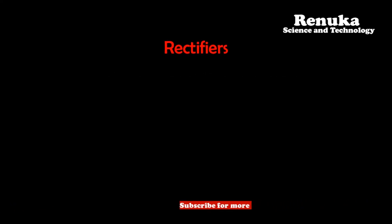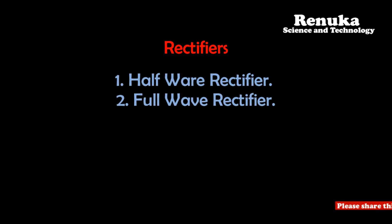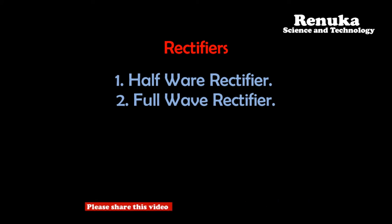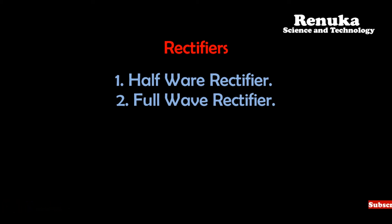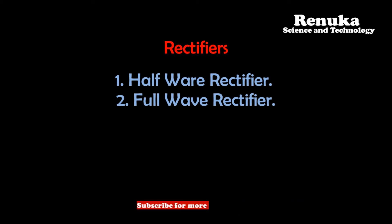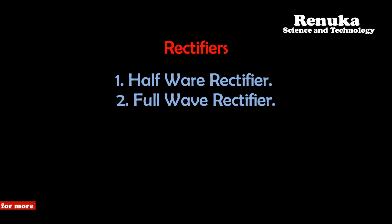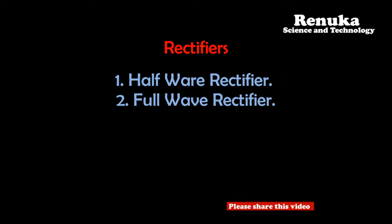Rectifiers are mostly classified into two types: half wave rectifier and full wave rectifier. In a half wave rectifier, the output current flows only for half cycle of the input AC. In a full wave rectifier, the output current flows for both half cycles in the same direction.